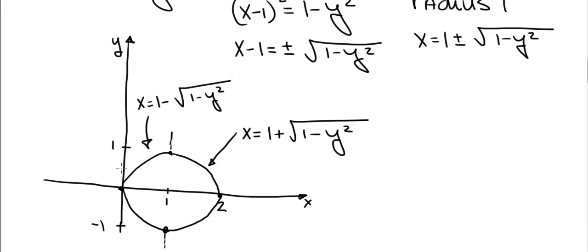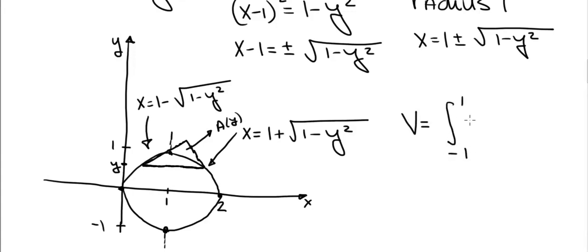According to the problem, cross sections perpendicular to the y-axis are equilateral triangles. For a chosen y between minus 1 and 1, one side of the equilateral triangle lies on the base, perpendicular to the y-axis. If we express the area of this triangle as A(y), the volume equals the integral from minus 1 to 1 of A(y) dy — each A(y) dy is a thin slice of volume, and adding them all up gives the exact volume.